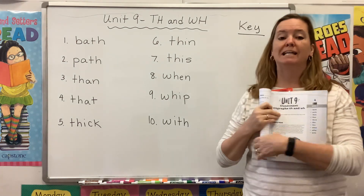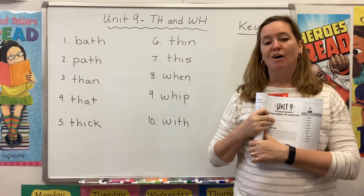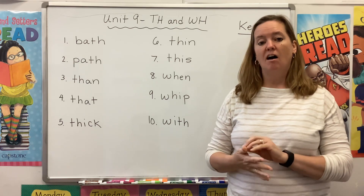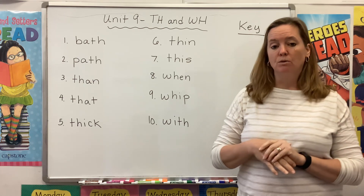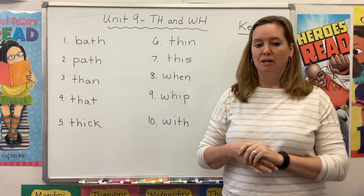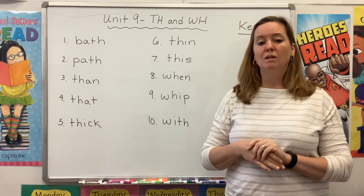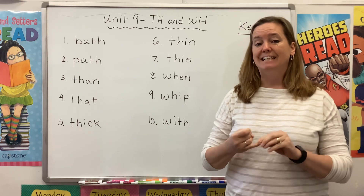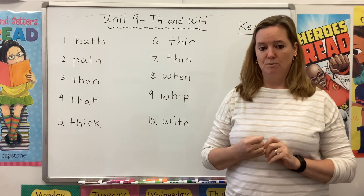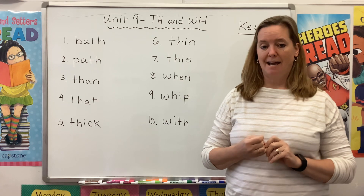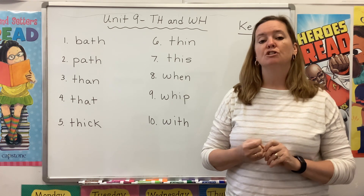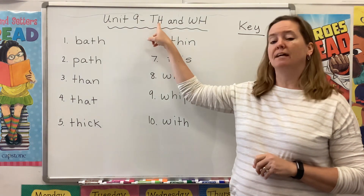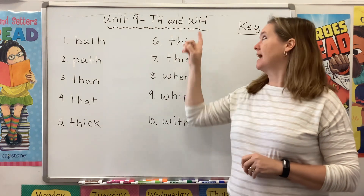Please save room for a key as well. So we started this year learning about short vowels. For the last few weeks, we've been reviewing those short vowels as we learn about something called a digraph. Remember, a digraph is two letters coming together to make a brand new sound. So for instance, CK makes a K sound, CH makes a CH sound, and SH makes a SH sound. This week, we're going to learn about two more sounds: the digraph TH and the digraph WH.